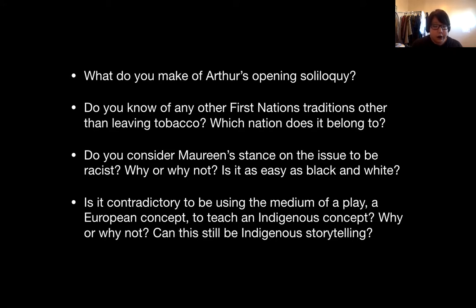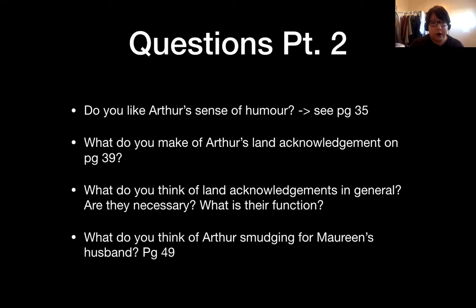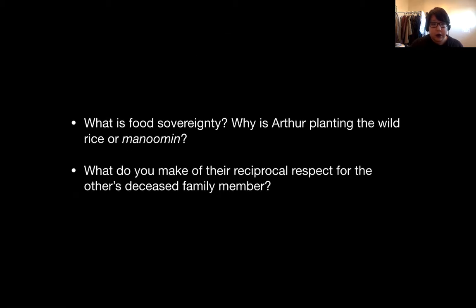I'm going to read you the next set of questions for the next section, but we're not going over them until two weeks from now. Questions part two: Do you like Arthur's sense of humor? See page 35. What do you make of Arthur's land acknowledgement on page 39? What do you think of land acknowledgements in general — are they necessary, what is their function? What do you think of Arthur smudging for Maureen's husband? Page 49. What is food sovereignty? Why is Arthur planting the wild rice, or manumen? What do you make of the reciprocal respect for the other's deceased family member?